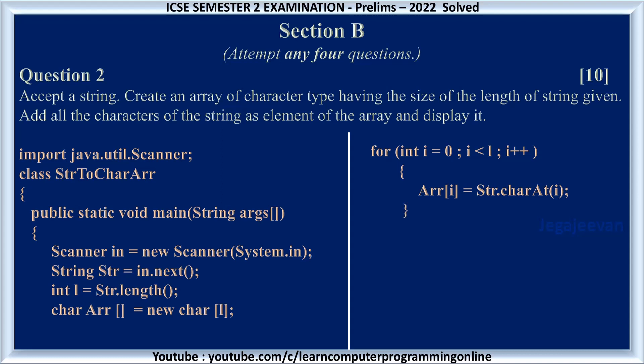Now the array is ready. To display the array we need again a for loop: for(int i = 0; i < l; i++). We will print ar[i]. We will not give println so that it prints on the same line. A comma is given so that it prints a comma after every element. A similar type of program you may get which carries 10 marks.